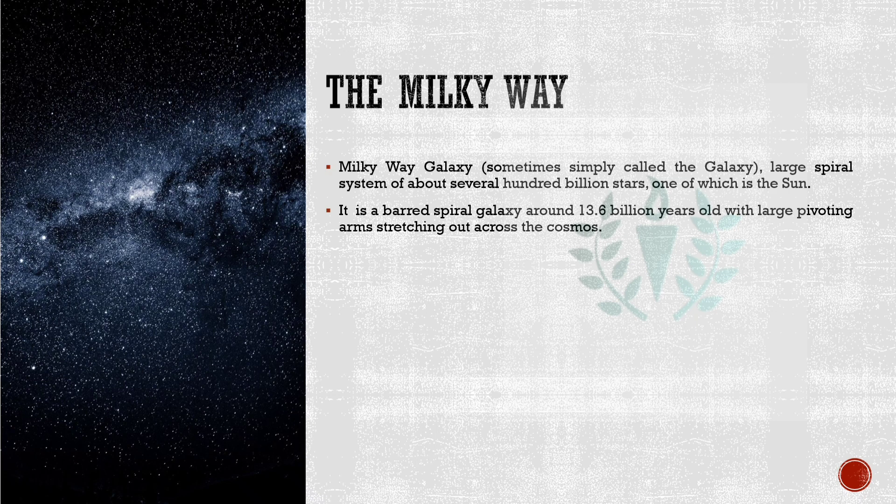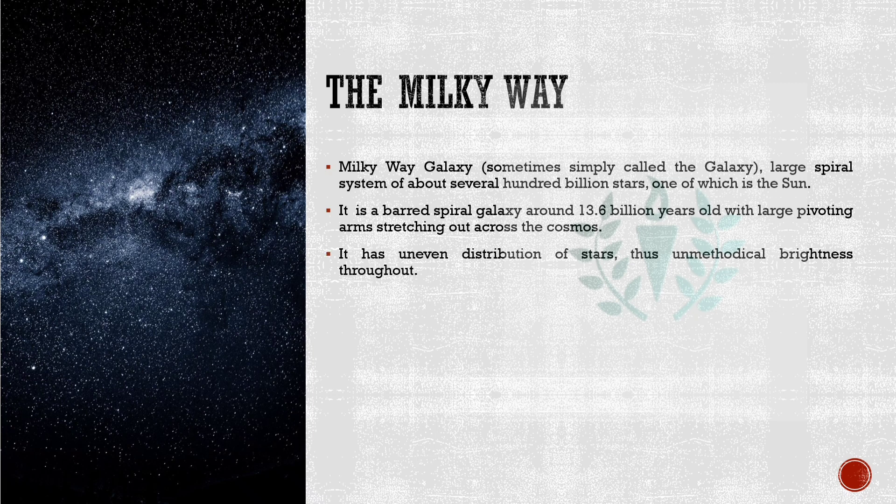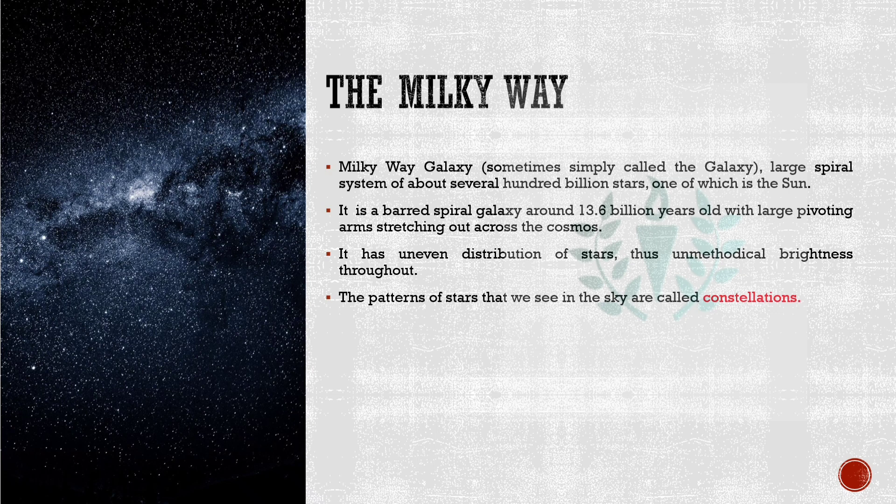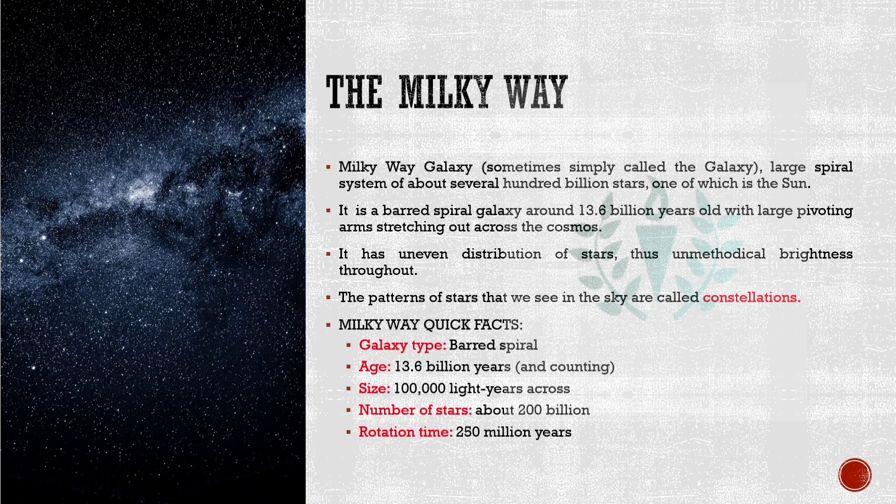It is about 25,000 light years away from the center of the galaxy. The spiral galaxy is believed to be around 13.6 million years old with large pivoting arms stretching out across the cosmos or universe. It has uneven distribution of stars, thus unmethodical brightness throughout. The patterns of stars that we see at clear night in the sky are called constellations. The constellations you can see at night depend on your location on Earth and the time of the year. These were named after objects, animals, and people long ago.